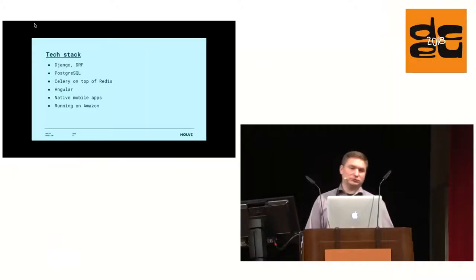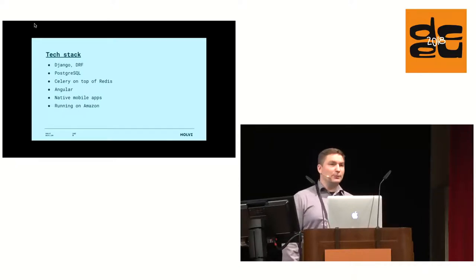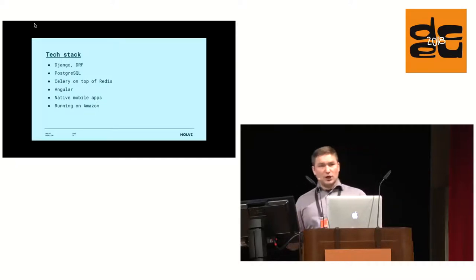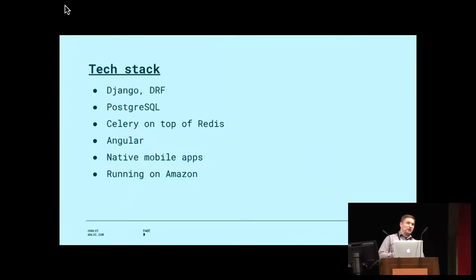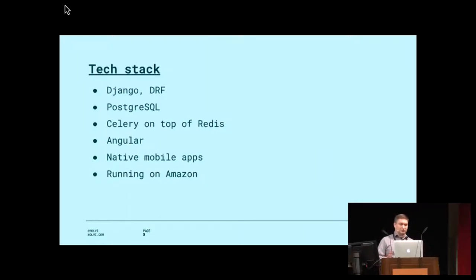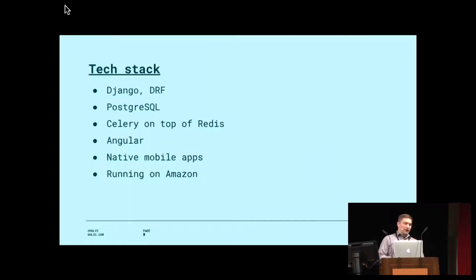Our tech stack: we have Django, Django REST framework, and PostgreSQL. We have Celery for asynchronous and scheduled tasks using Redis behind that. We have Angular on the front-end, native mobile apps for iOS and Android, and we're running all of this on Amazon - using S3, EC2, RDS, and a lot of services. It's working really well for us.